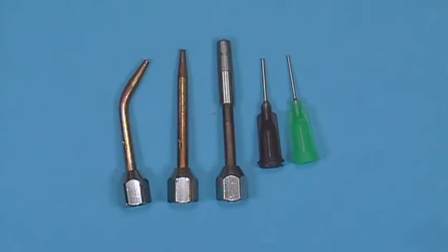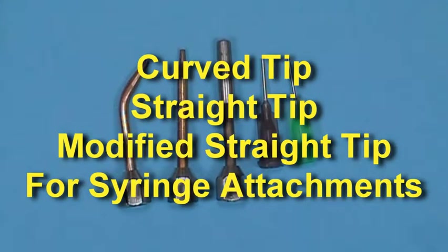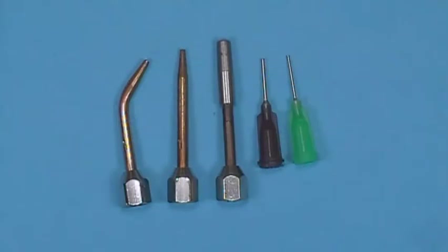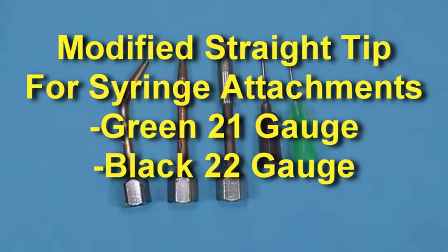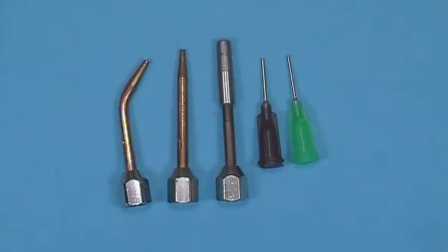There are three metal master tips that screw onto the end of the torch. They are the curved, straight, and modified straight tip that holds either of two syringe tip ends. The modified straight tip requires either a green 21-gauge or black 22-gauge syringe tip end to be used.